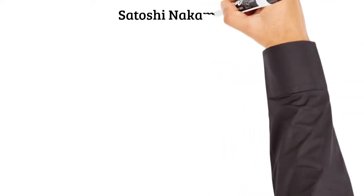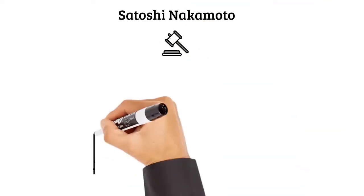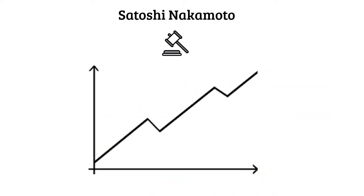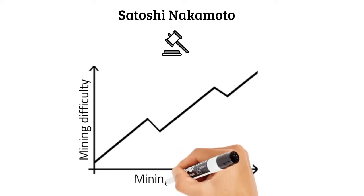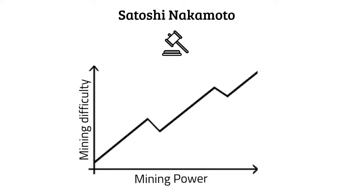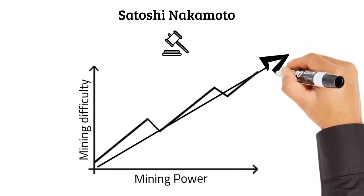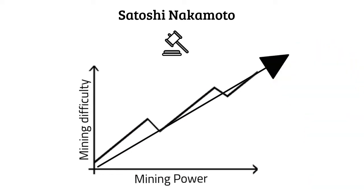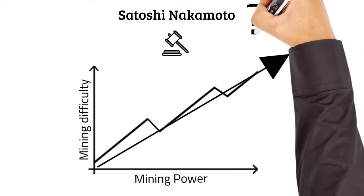Satoshi Nakamoto, who invented bitcoin, designed the rules for mining in a way that the more mining power the network has, the harder it is to guess the answer to the mining math problem. So the difficulty of the mining process is actually self-adjusting to the accumulated mining power the network possesses. If more miners join, it will get harder to solve the problem. If many of them drop off, it will get easier. This is known as the mining difficulty.